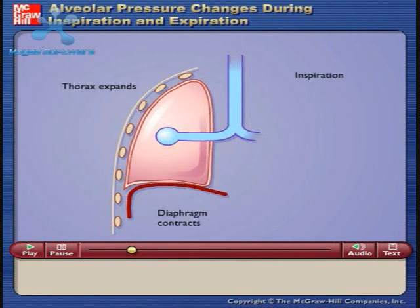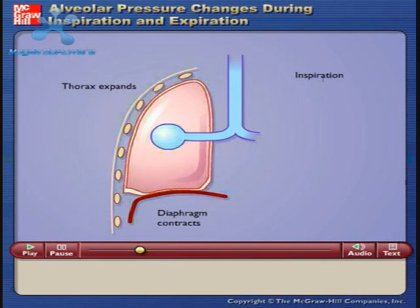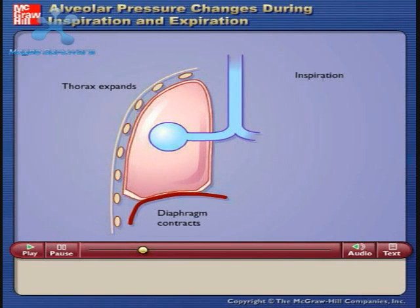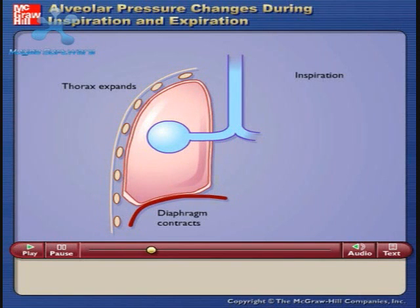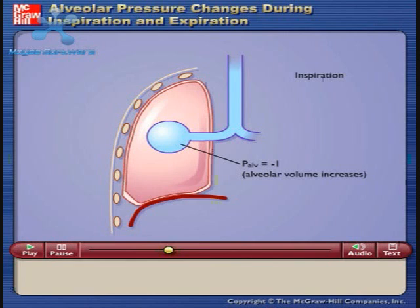Inspiration begins with contraction of inspiratory muscles to increase thoracic volume. This results in expansion of the lungs and an increase in alveolar volume. The increased alveolar volume causes a decrease in alveolar pressure below barometric air pressure, and air flows into the lungs.